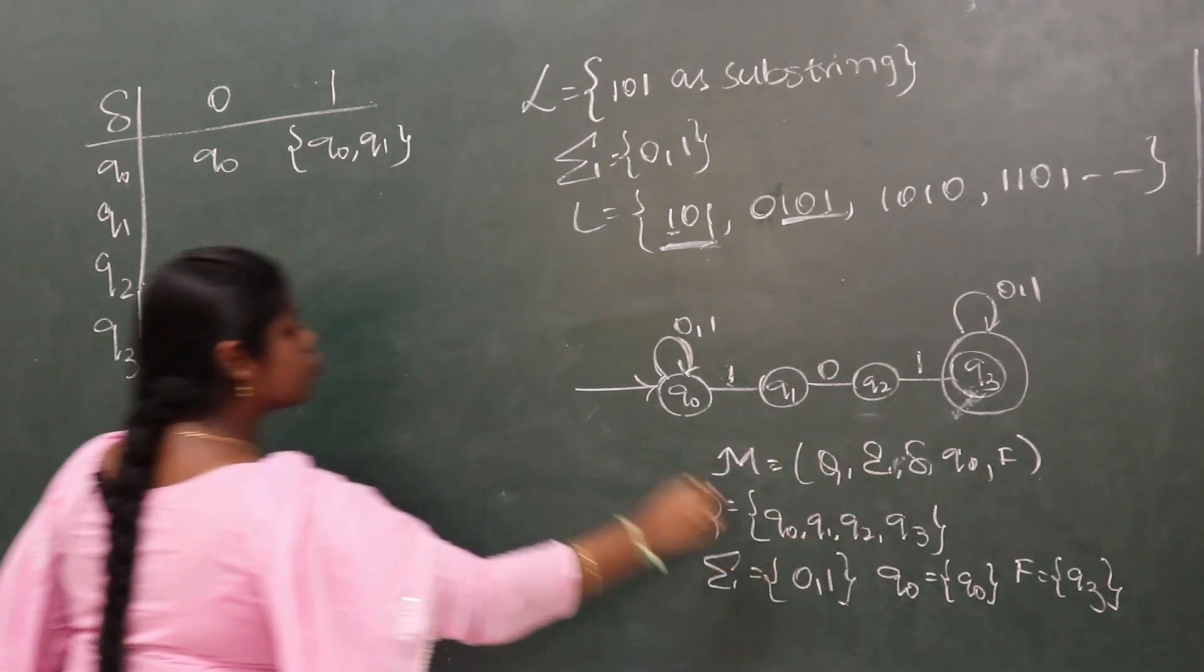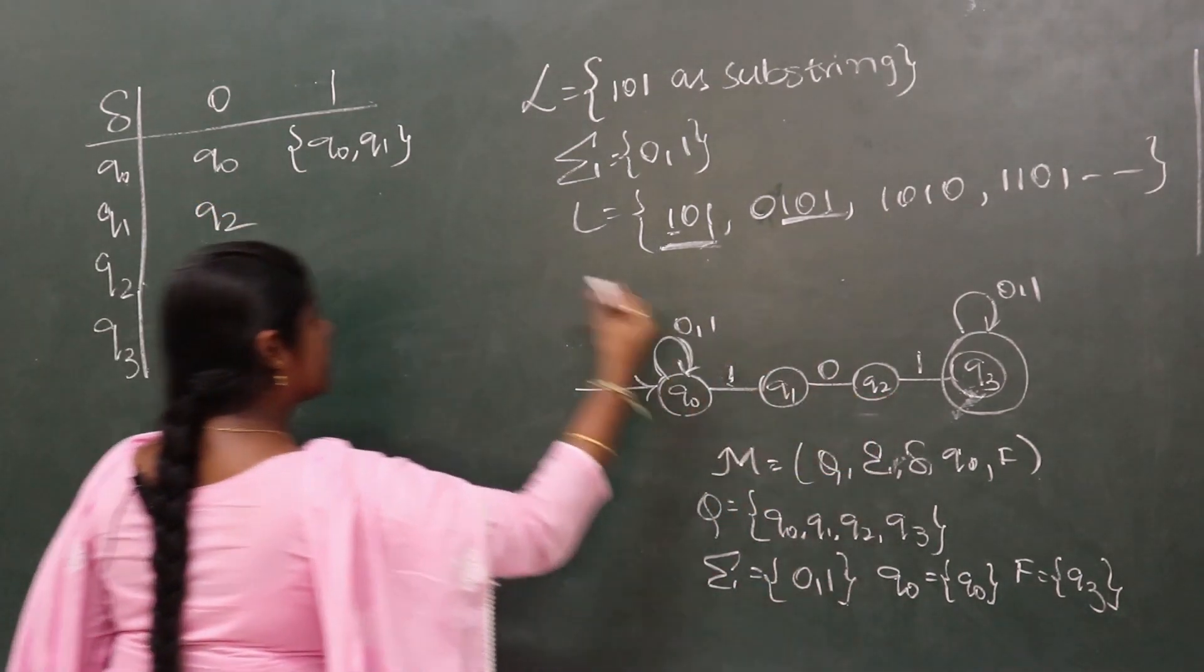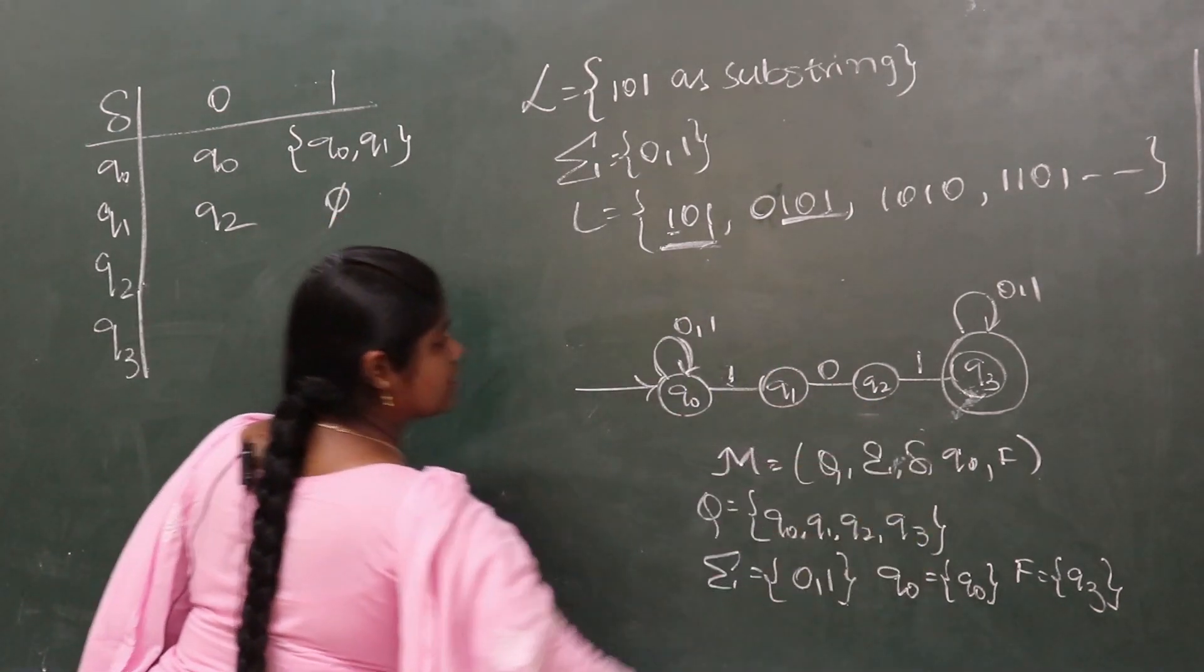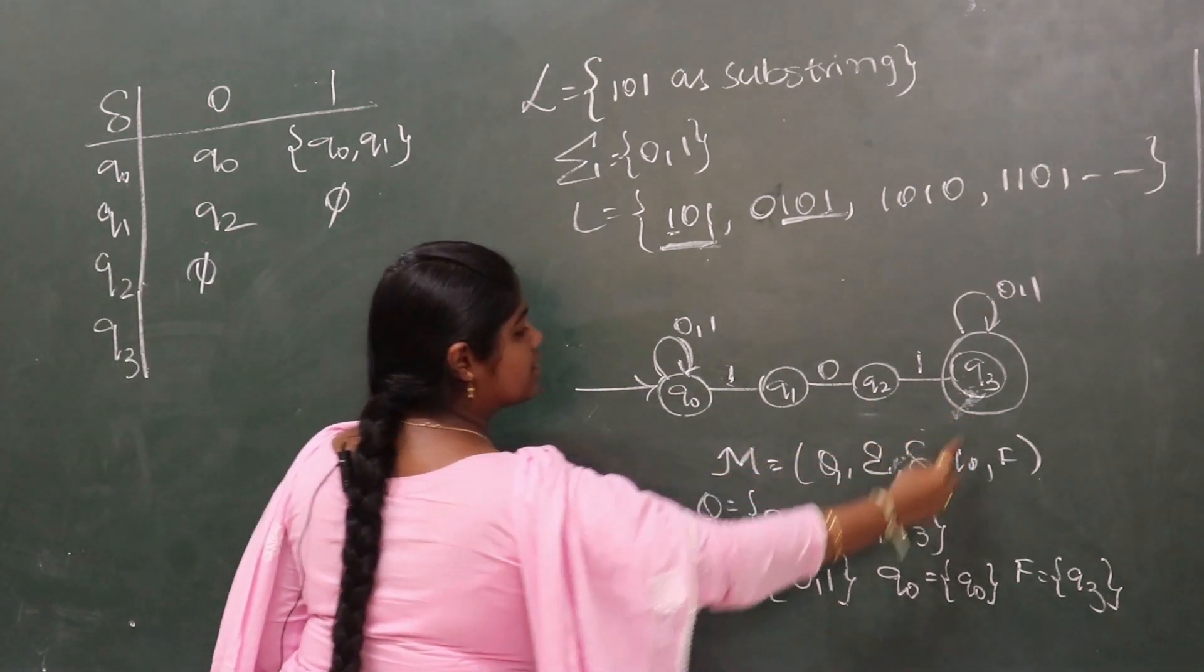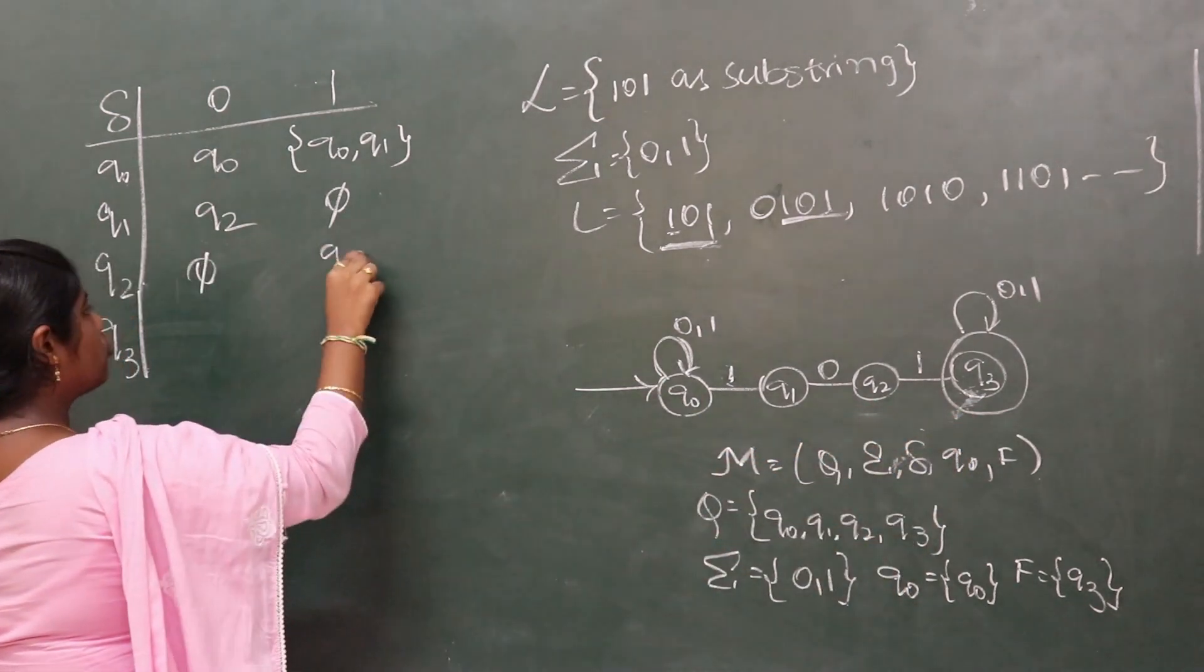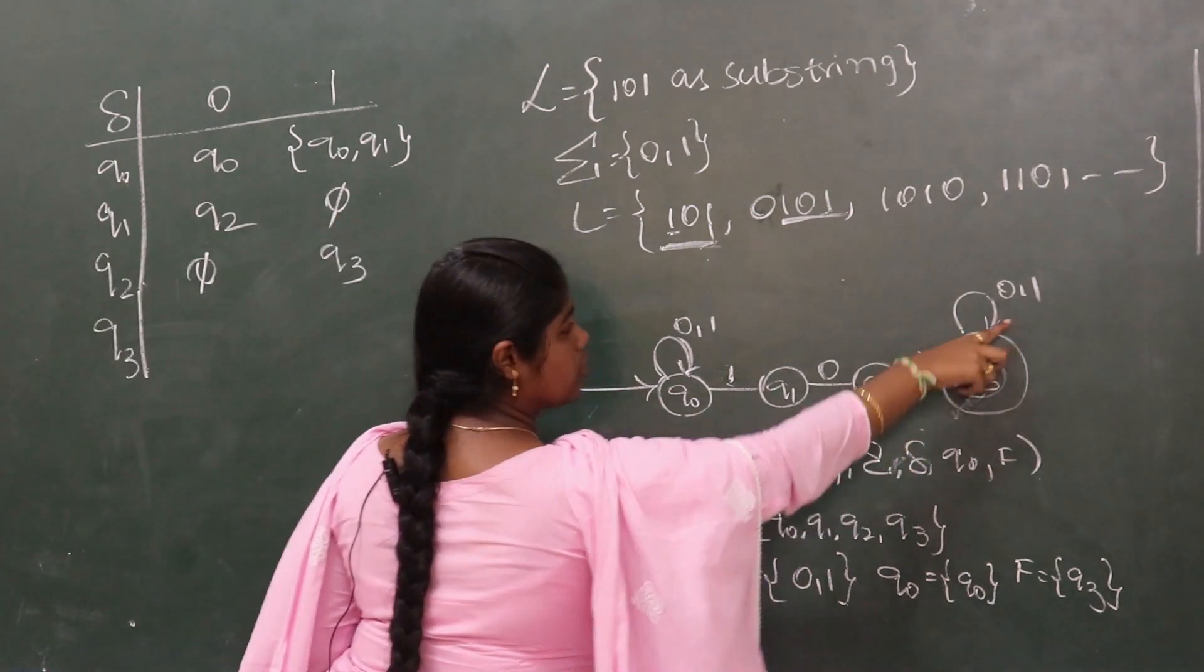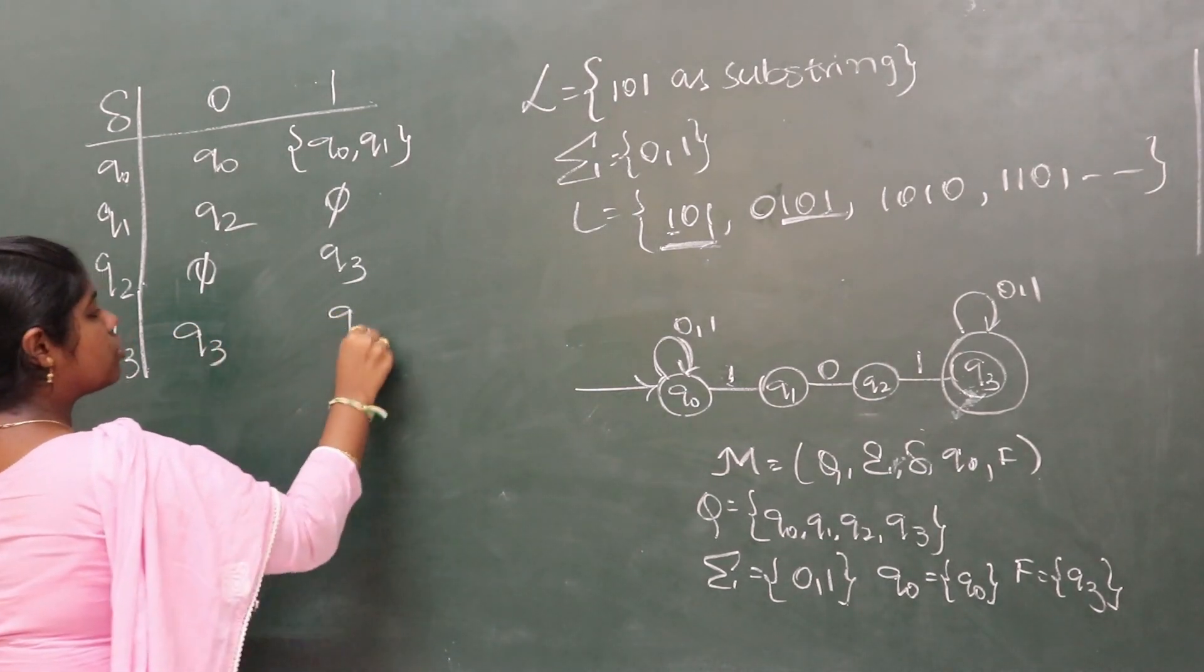q1 on 1 has no transition, therefore it is a null set. q2 on 0 has no transition so it is null. q2 on 1 has a transition to q3, therefore q2 on 1 goes to q3. q3 on 0 and 1 goes to q3 itself. So q3, q3.